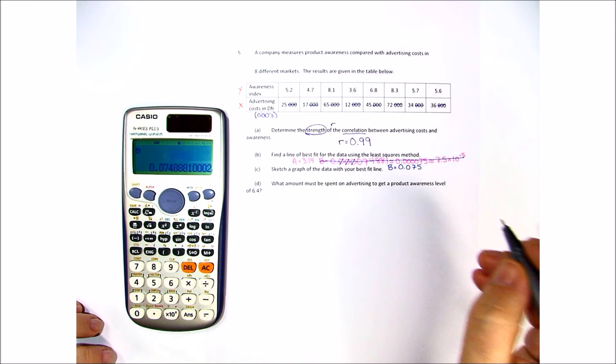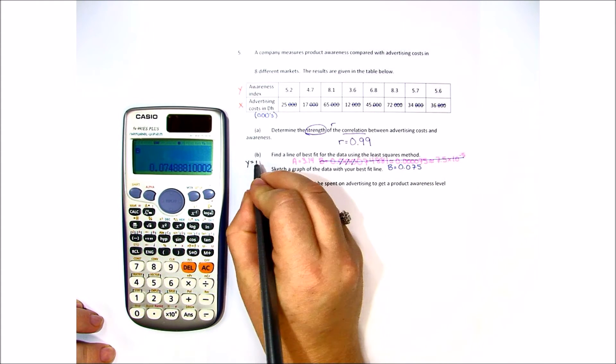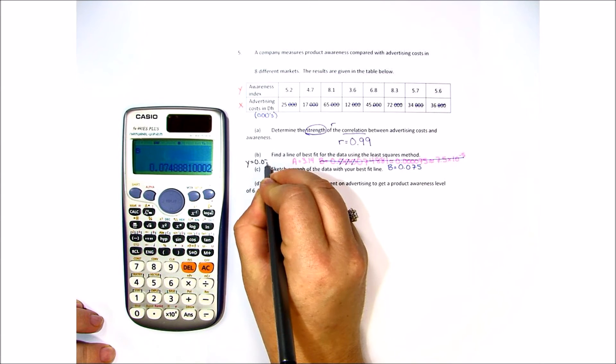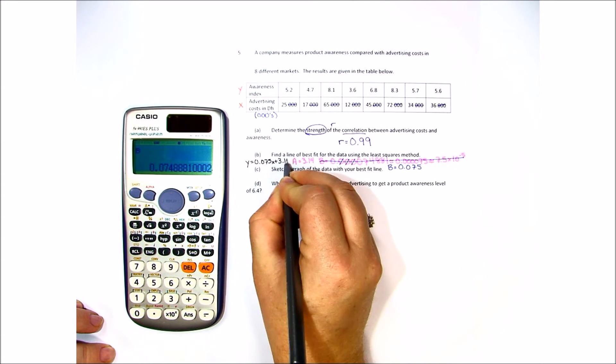So let's go ahead and write the line of best fit, and we get y equals 0.075x plus 3.14.